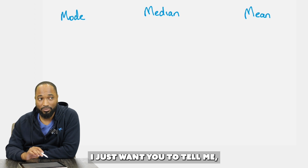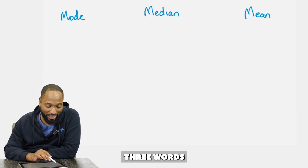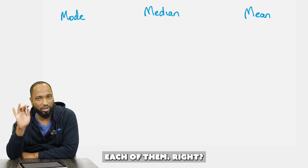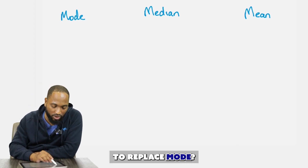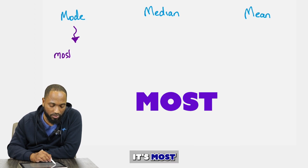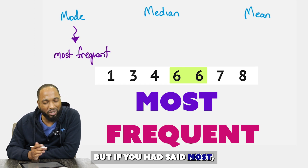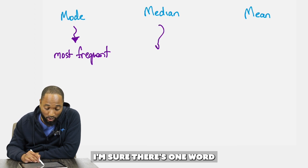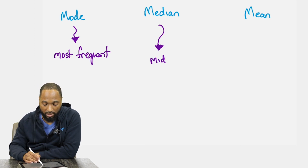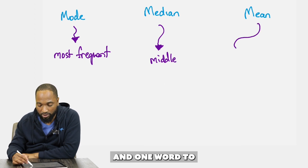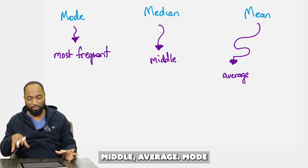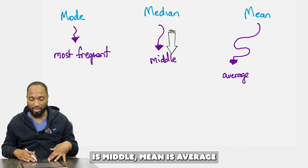Let's find one word to replace each of these. For mode, it's 'most frequent' — two words, but 'most' works. For median, the one word is 'middle.' And for mean, the word is 'average.' So: mode is most frequent, median is middle, mean is average.